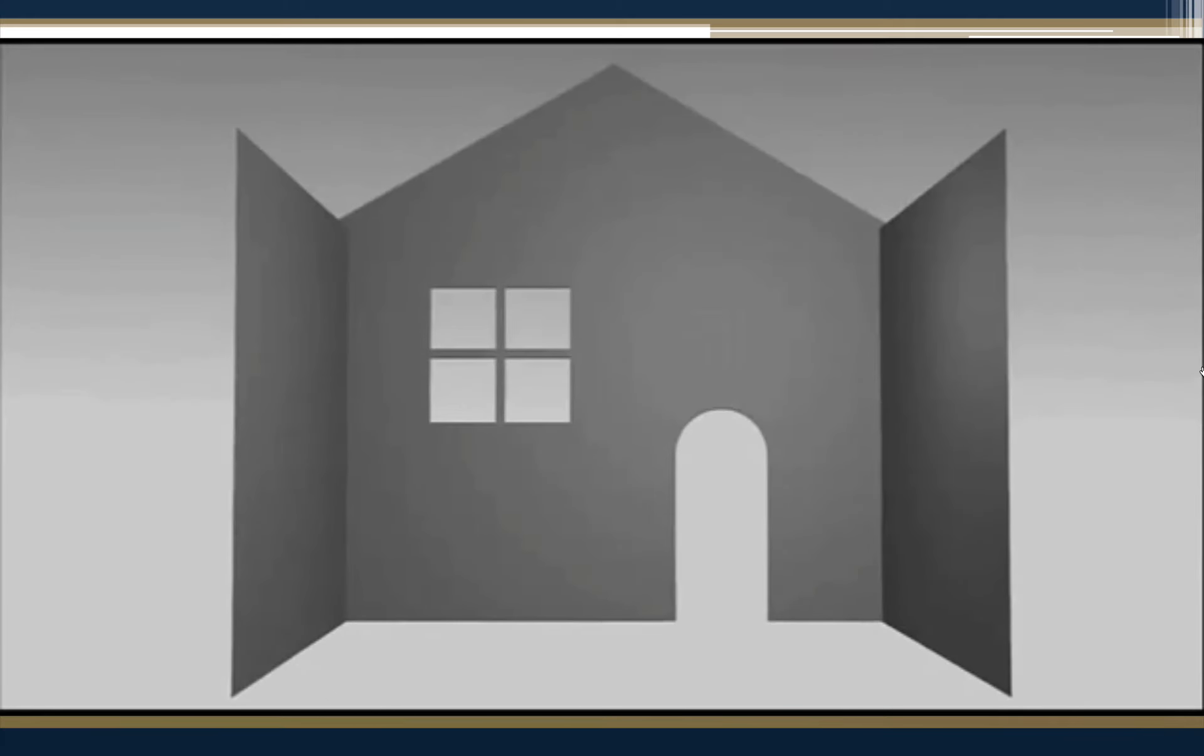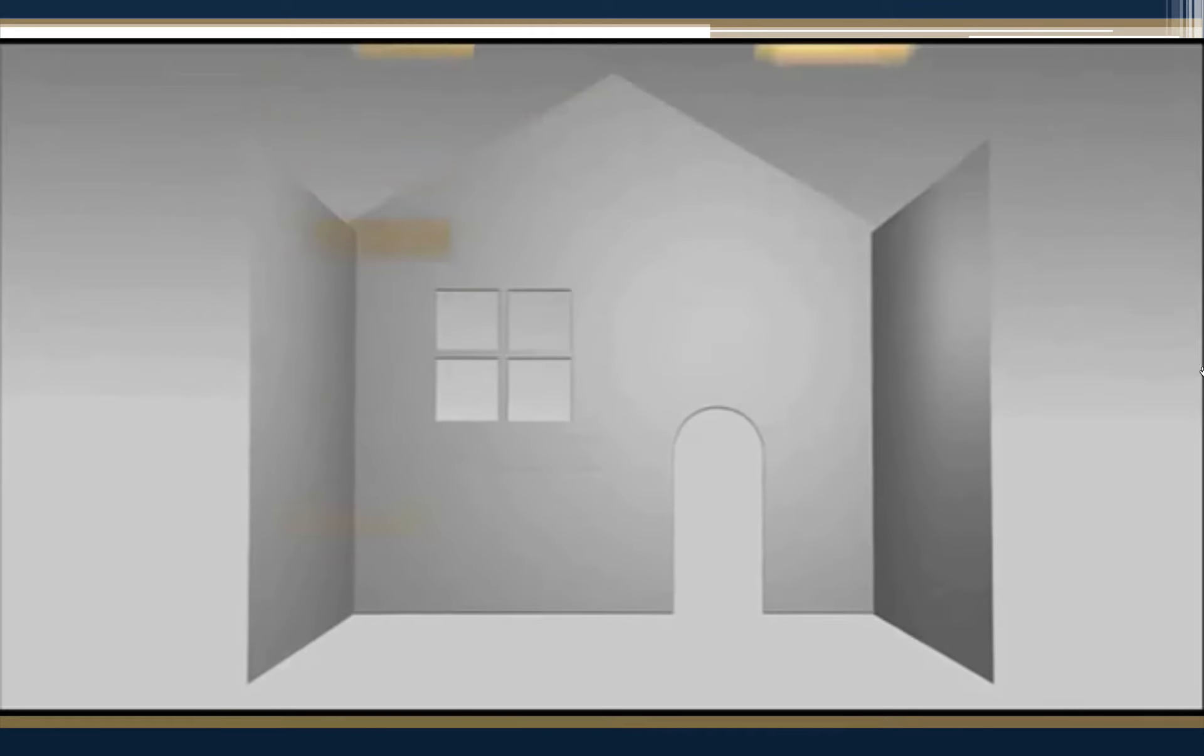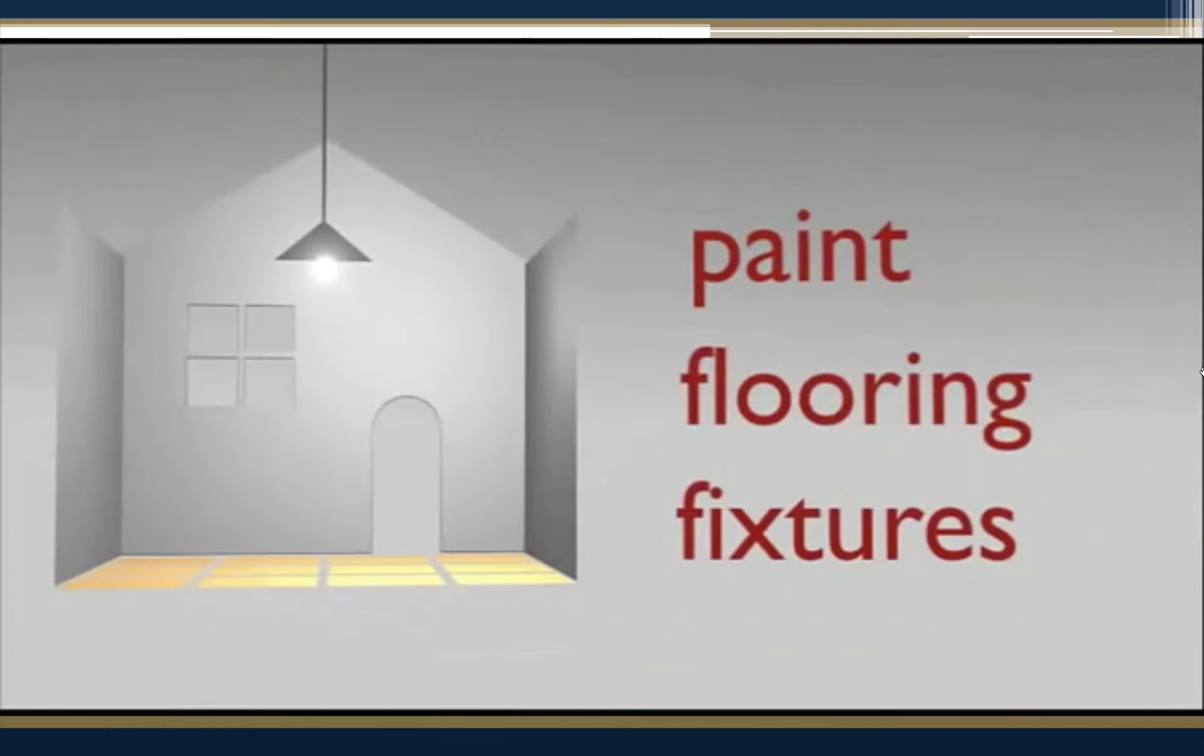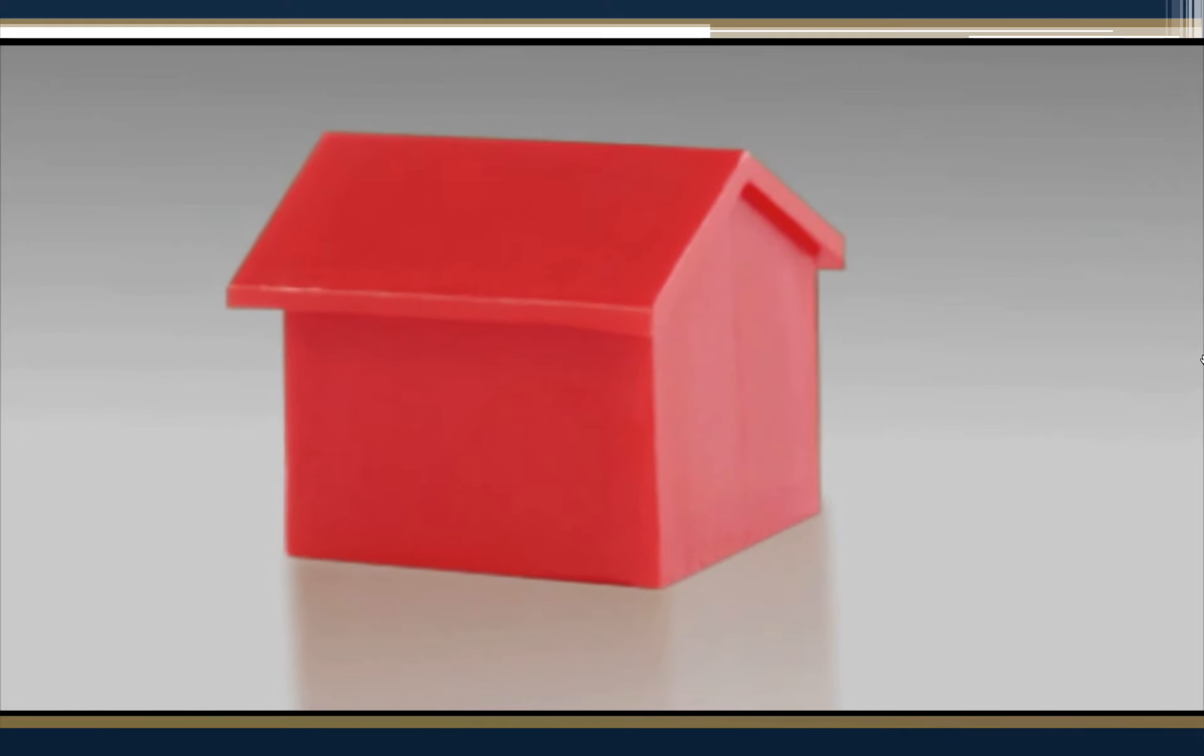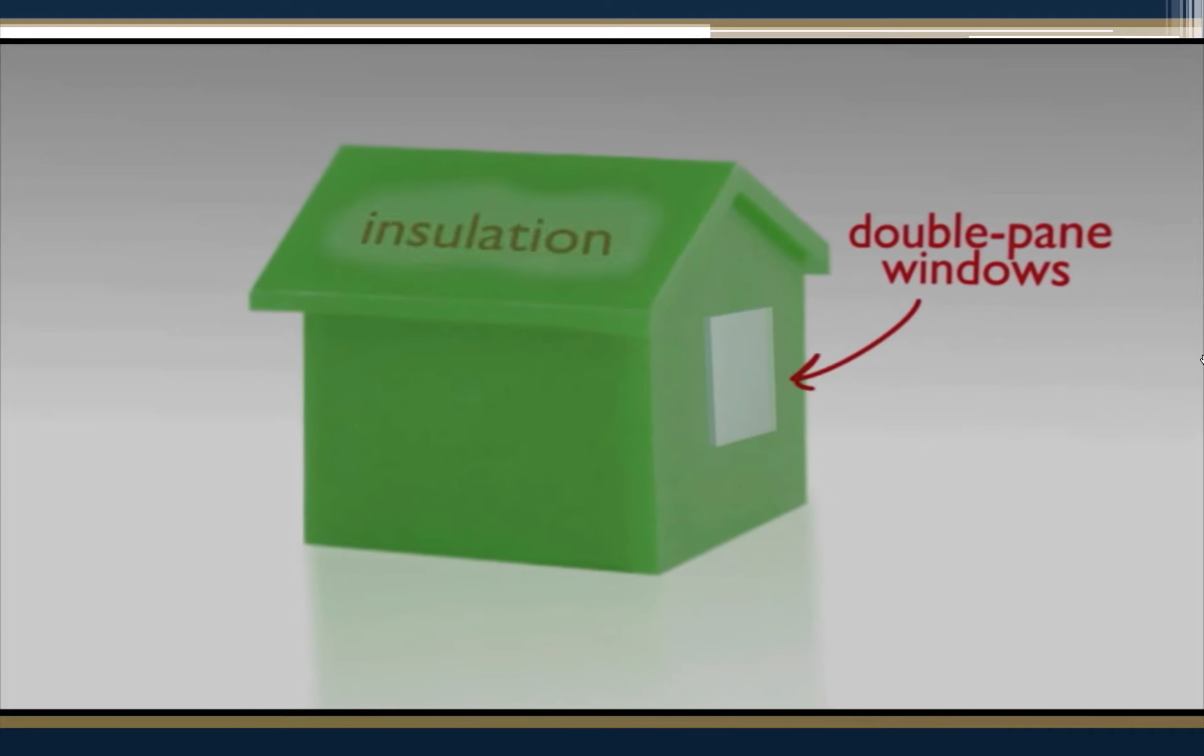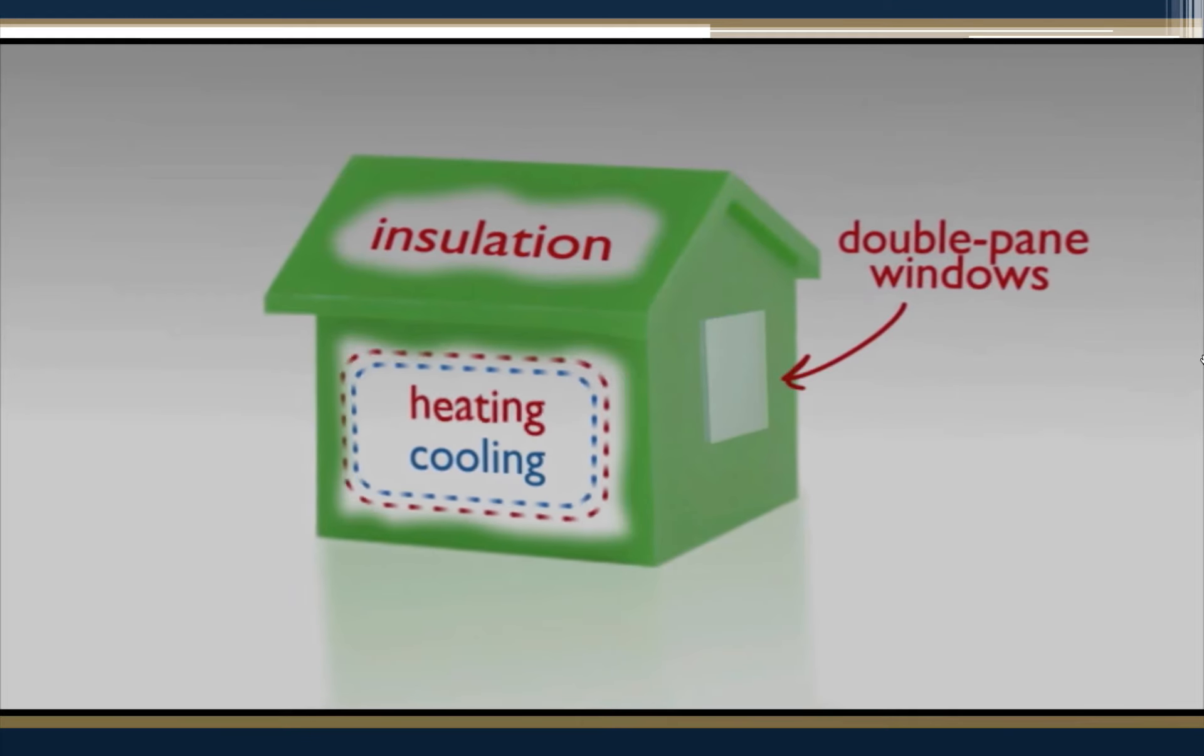Then you should know that most sellers choose to paint, replace the flooring, or update the fixtures. Also, the top three most requested green features buyers are looking for now are double-pane windows, insulation, and efficient heating and cooling systems.